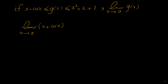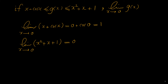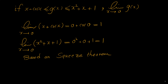The limit of x plus cosine of x as x approaches 0 can be evaluated by direct substitution: plugging in 0 gives 0 plus cosine of 0. Cosine of 0 is 1, so this limit equals 1. Now the limit of the right side function as x approaches 0: plugging in 0 also gives 1. Because the limit of the left function and the limit of the right function exist and are equal, based on the squeeze theorem, the limit of g of x as x approaches 0 is also 1.